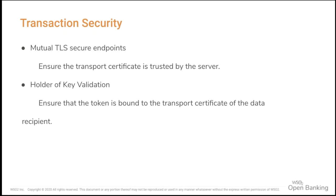That explains the basic journey for the consent granting and data retrieval process. Moving on to transaction security: the specification mandates that apart from unauthenticated endpoints, all other endpoints must be secured by mutual TLS, which is supported by our open banking solution. It also specifies holder of key validation — when the access token is issued to the data recipient, their transport certificate is bound to the access token scope. When they invoke a particular API endpoint, the access token scope is validated against the transport certificate belonging to the data recipient.